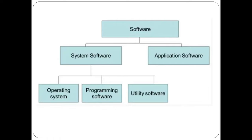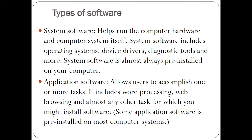Under system software we also have different categories. One major category is the operating system. We also have programming software and utility softwares. In application software, we have examples such as spreadsheet, Word, and so on. The difference between system software and application software is that system software helps manage the computer hardware, while application software allows you as a user to accomplish specific tasks — like if you want to type something, you'll need a Word application, or if you need to browse the internet, you'll need a web browser such as Chrome.